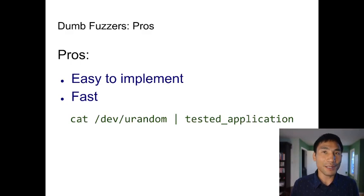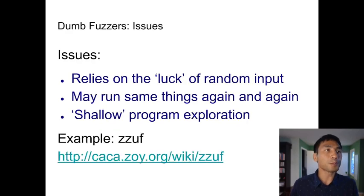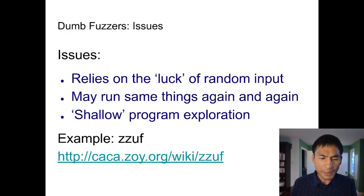There are some benefits to dumb fuzzing: it's easy to implement and it's fast. You can pipe random input to your application. That'll work sometimes, but it doesn't work very well for most applications now because they've already been fuzz tested and are resilient to bad input. The issue is that it relies on luck to find the thing, and it might fail because it runs the same things again and again, which doesn't tell you very much about the program.